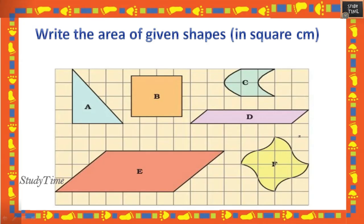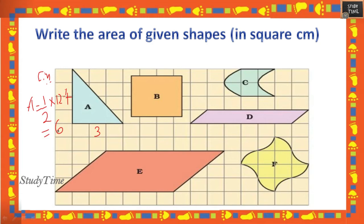Write the area of given shapes in square centimeters. Each square is one square centimeter. You can find the area in two ways: count the covered squares, or use a formula. For shape A: it is half of a rectangle; the rectangle is 4 × 3 = 12, so A = 6 square centimeters.